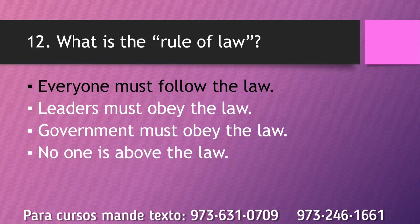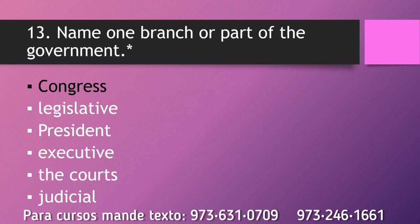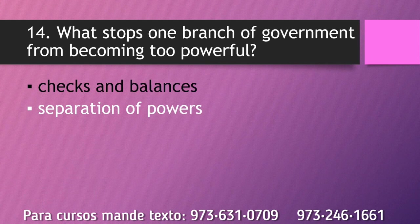What is the rule of law? Everyone must follow the law. Name one branch or part of the government. Congress. What stops one branch of government from becoming too powerful? Checks and balances.